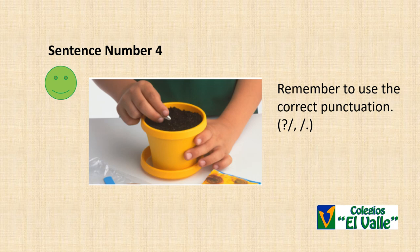Remember to use the correct punctuation. Sentence number four. What did Lily do yesterday morning? She planted seeds. What did Lily do yesterday morning? She planted seeds.